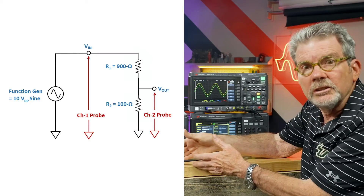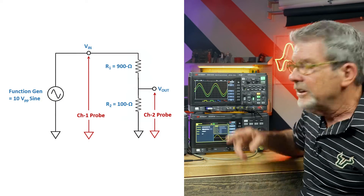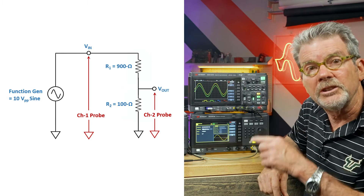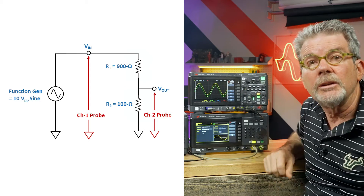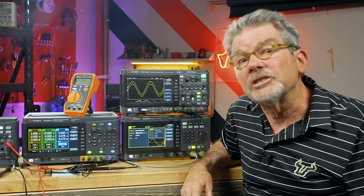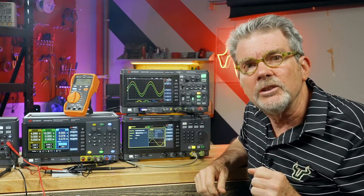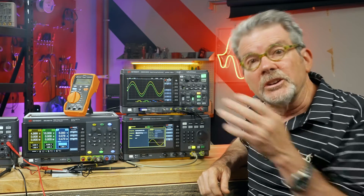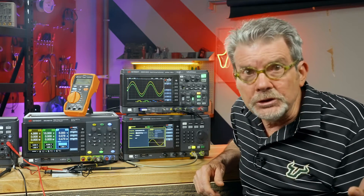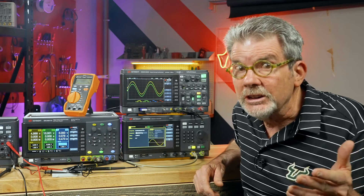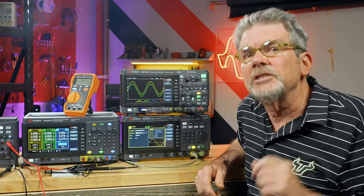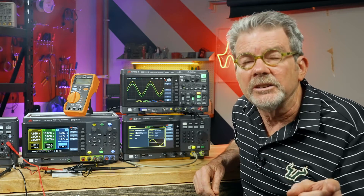The built-in function generator is probably good enough for most of your experiments, but since I have a better external function generator, I'll be using that for most of my demonstrations in this video series. With my oscilloscope probes connected to the input and output of this circuit, we now see two waveforms displayed on the oscilloscope in a voltage versus time format. Voltage is displayed on the vertical axis, while time is displayed on the horizontal axis. Oscilloscopes can also measure current versus time, voltage versus frequency, voltage versus voltage, and even gain versus frequency — which is a Bode plot.